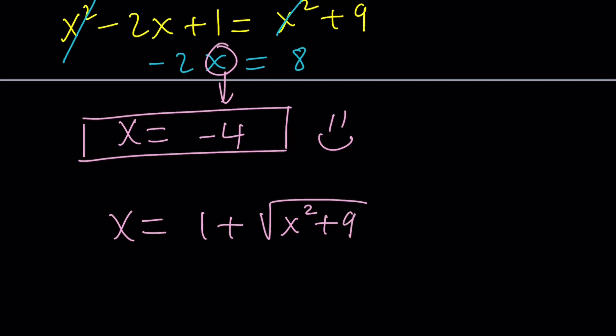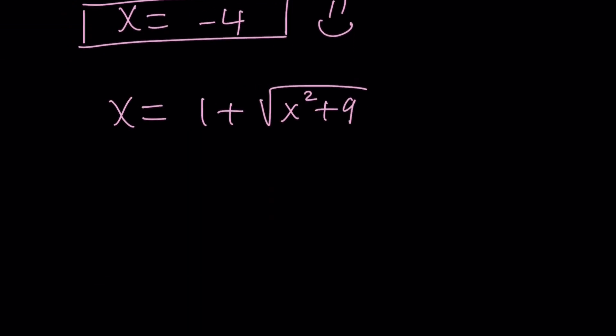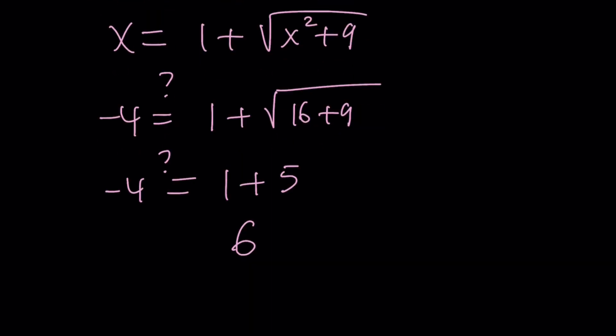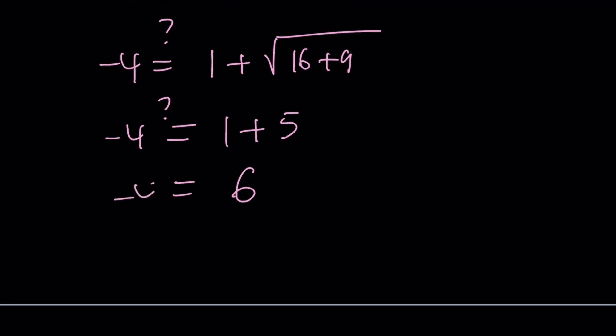When you plug in negative 4 on both sides, here you get negative 4. I'm going to put a question mark because we don't know if they're going to be equal yet. x squared is 16, 16 plus 9 is 25. The square root of 25 is 5. 1 plus 5 is 6.